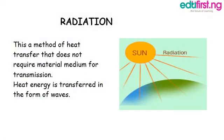Radiation is a typical example of heat transfer from the sun to the earth. It is a method of heat transfer that does not require a material medium for transmission, unlike conduction and convection. Energy is transferred in the form of electromagnetic waves. A typical example is the heat energy from the sun transferred to the earth.